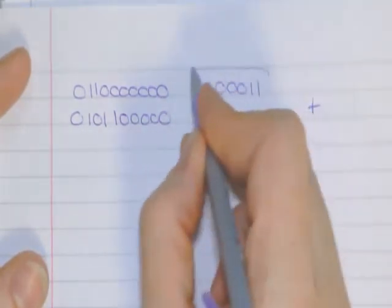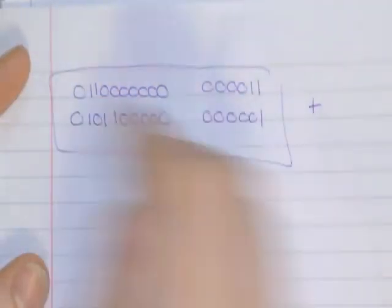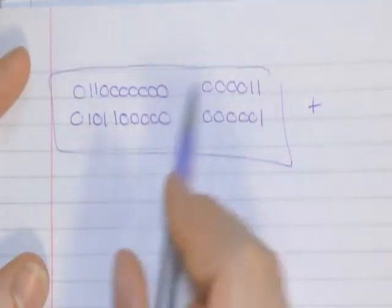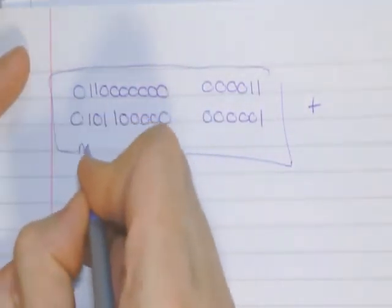Now, first of all, don't make the mistake of just adding these together, that doesn't work. What you've got to do is actually use your floating point and normalize, so you've got to normalize these.